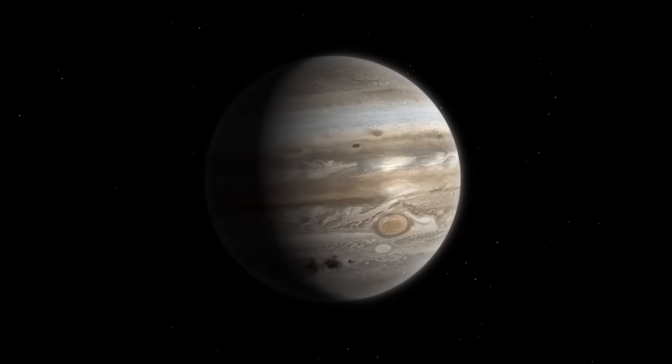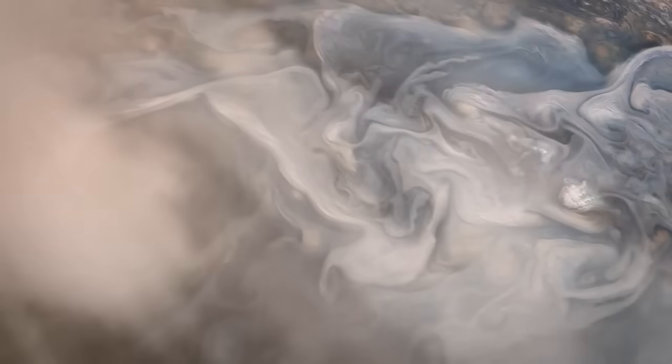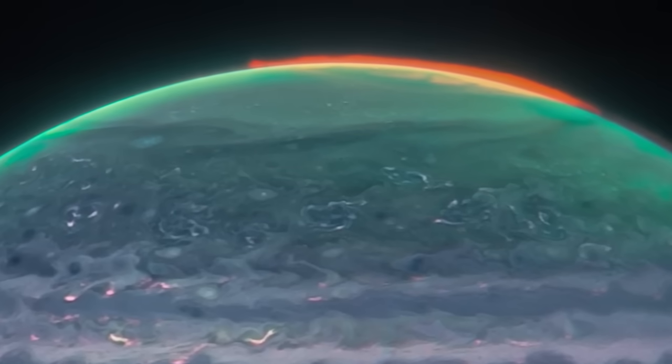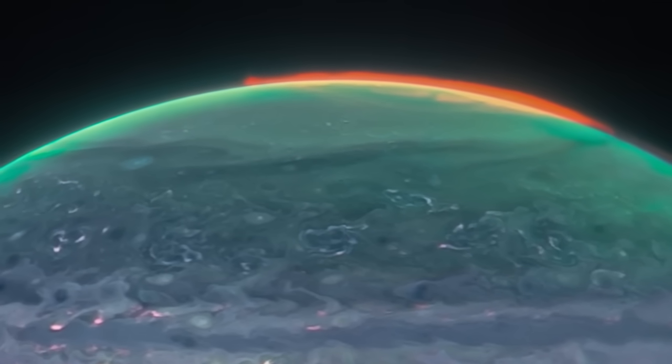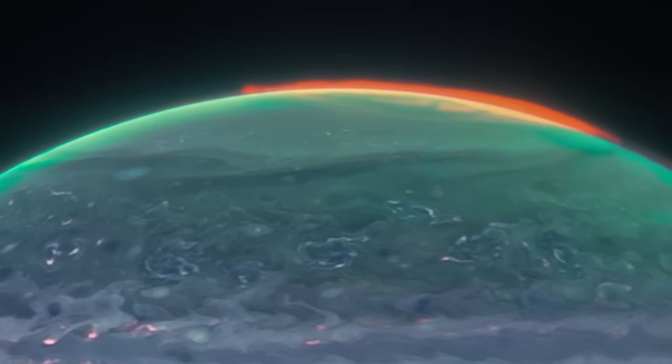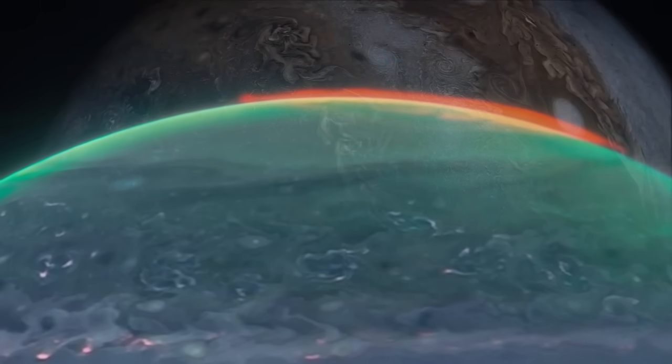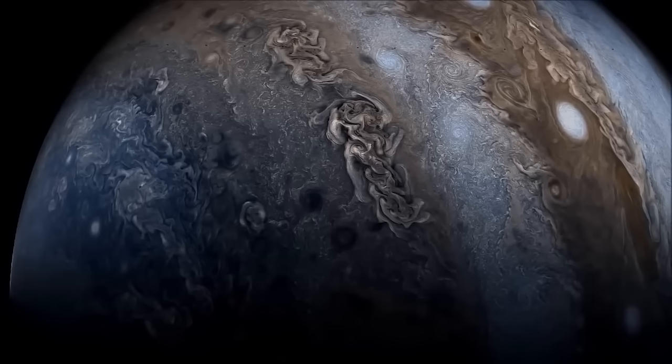The James Webb Telescope has also produced beautiful images of Jupiter, its moons, rings, and auroras. Precise images that will help astronomers to understand even better this huge planet that could swallow two and a half times all the planets of the solar system.